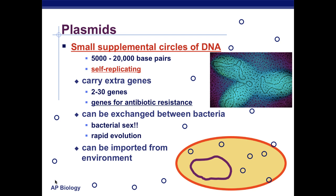Plasmids are small supplemental circles of DNA within the prokaryote. They're about 5,000 to 20,000 base pairs and are self-replicating. They carry extra genes, anywhere from 2 to 30, and they have genes for antibiotic resistance. They can be exchanged between bacteria — this is bacterial sex, in a sense. It's not like eukaryotic sex, but bacteria can share information through plasmids, and this allows for their rapid evolution, even though they're a single-celled organism.